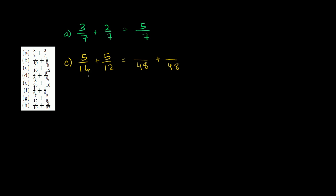So we had to multiply 16 times 3 to get to 48. So we're going to have to multiply this 5 times 3, right? We're just multiplying the numerator and the denominator by the same number, so we're not really changing it. So 5 times 3 is 15.